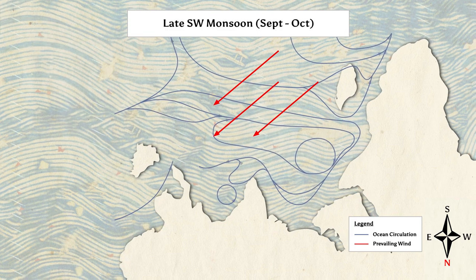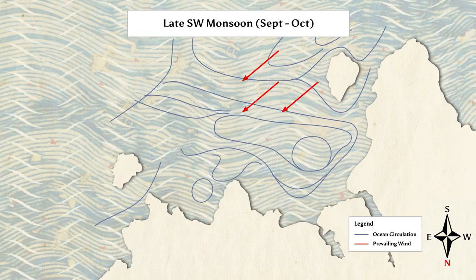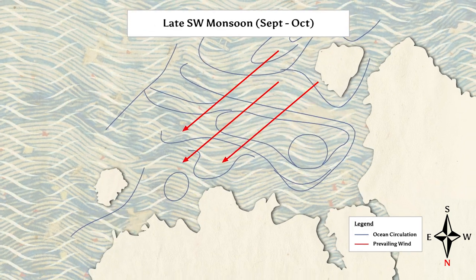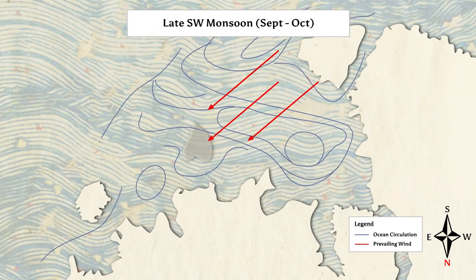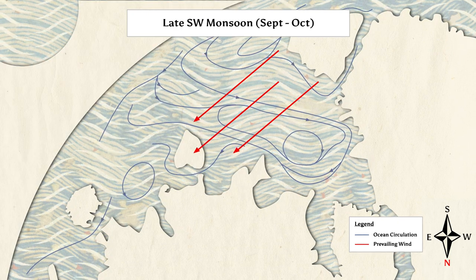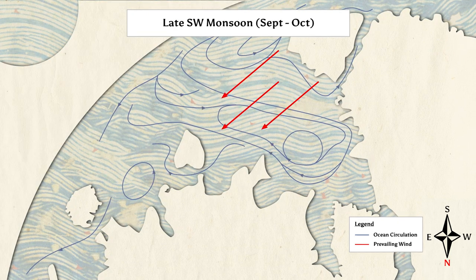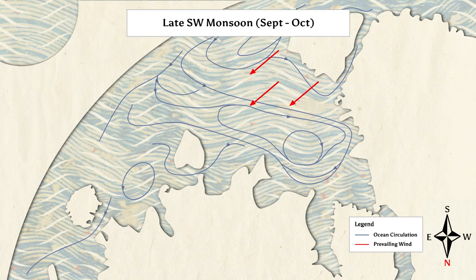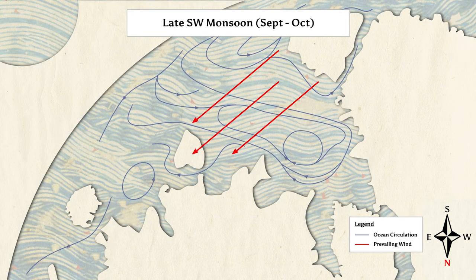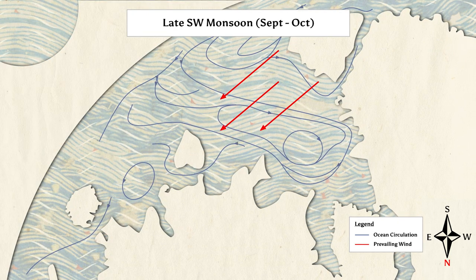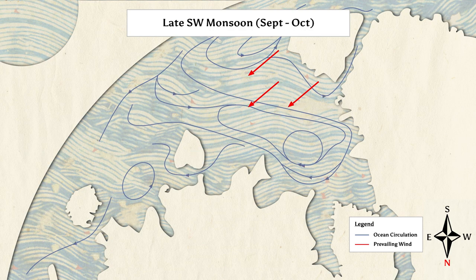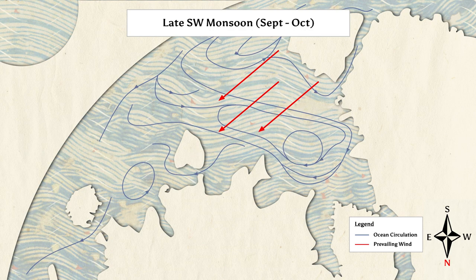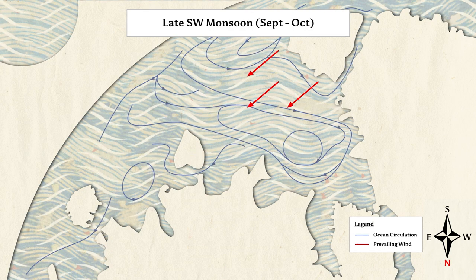Let us observe how monsoon and ocean currents would have looked on Fra Mauro's Map dated 1460. With present-day knowledge of monsoon and ocean currents, it is possible to theorise the maritime routes of ancient ships.